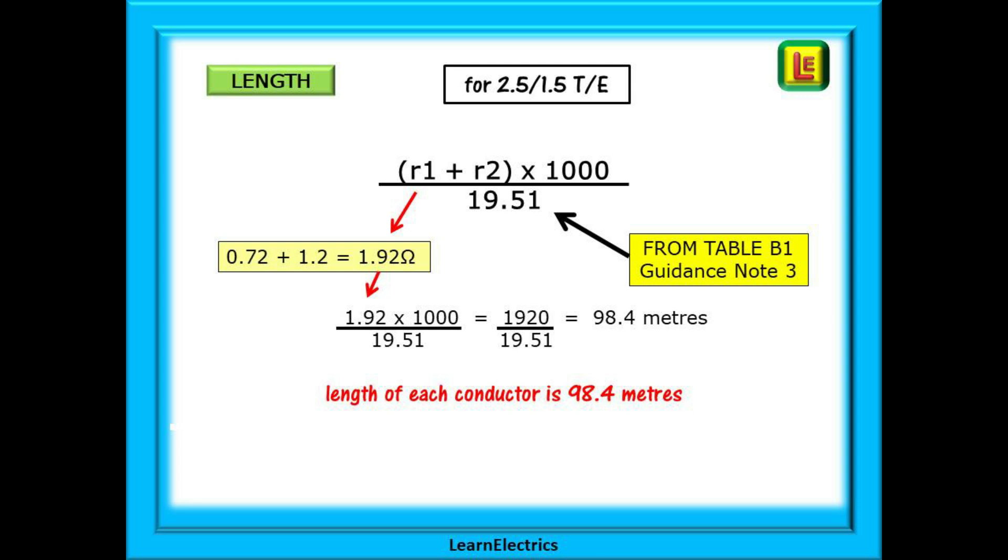Let's work it out. 0.72 plus 1.2 is 1.92 ohms. Multiply this by 1000, and we have 1920 divided by 19.51. Our twin and earth cable length is 98.4 metres end-to-end. Each conductor is approximately 98.4 metres long.